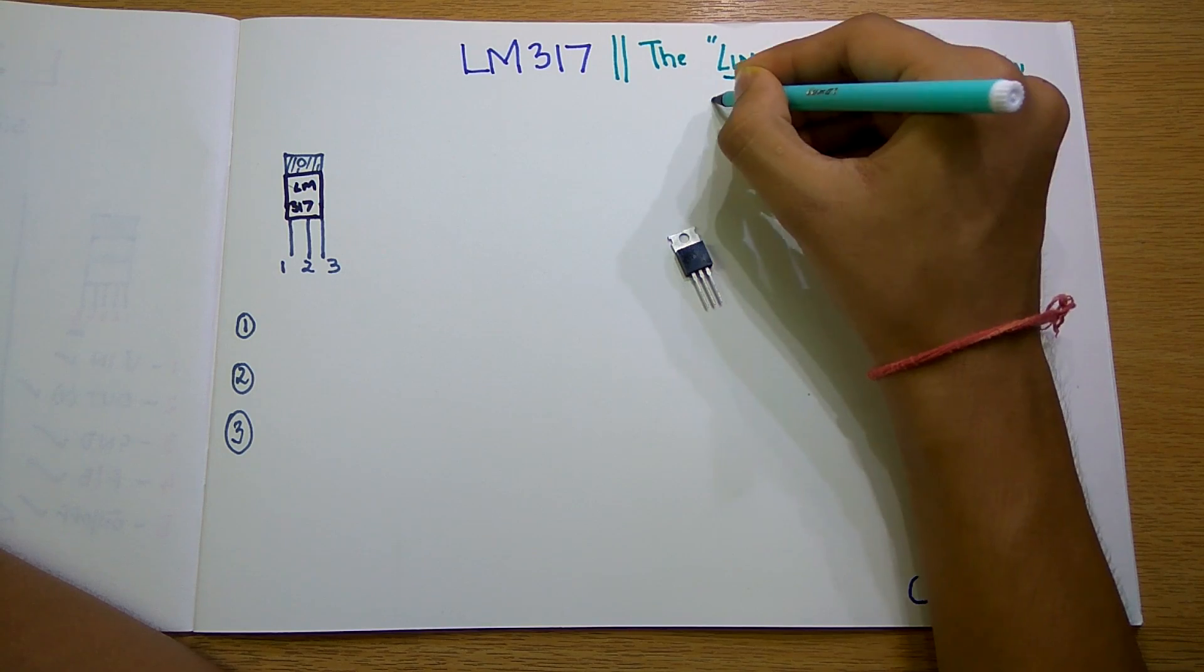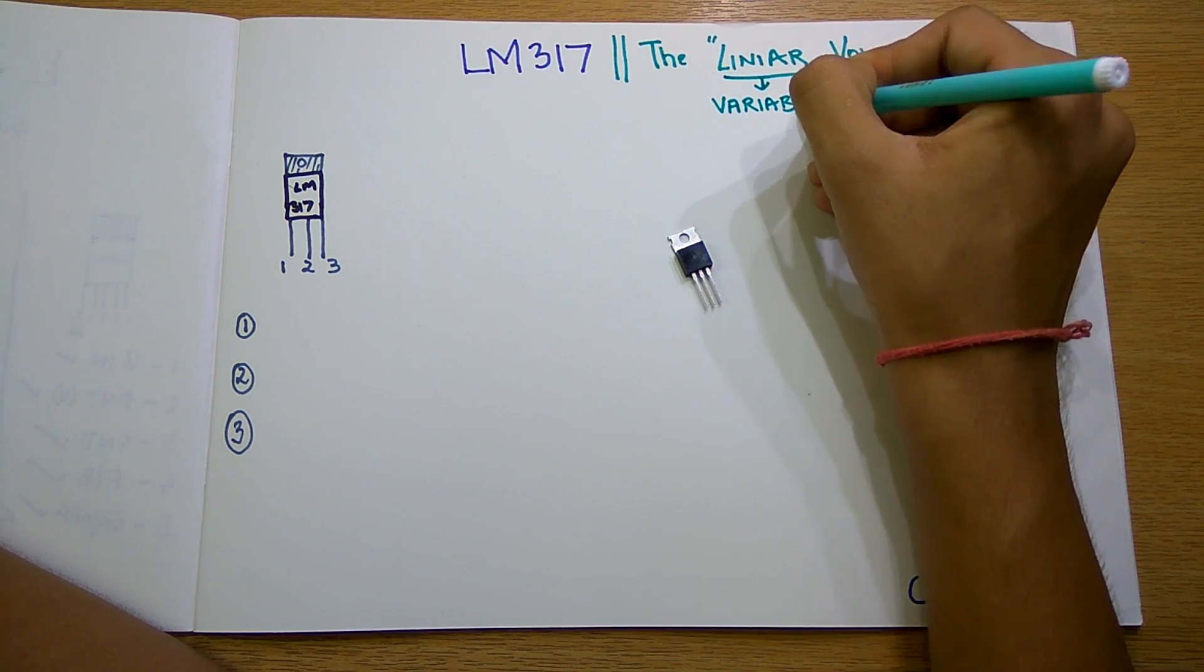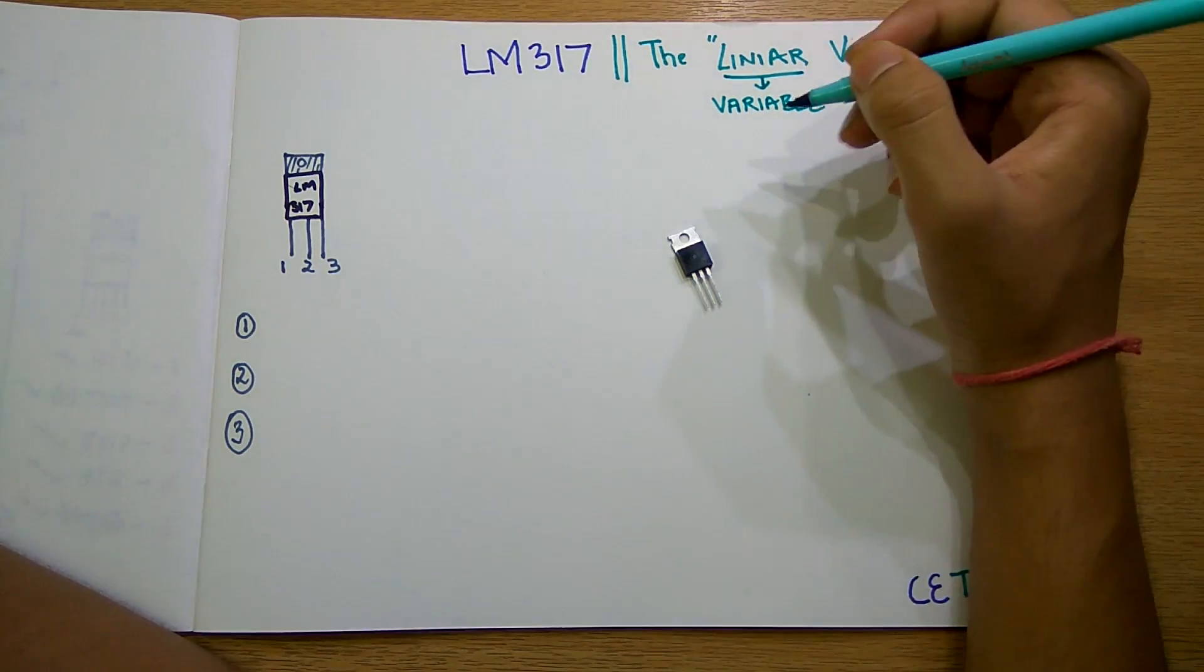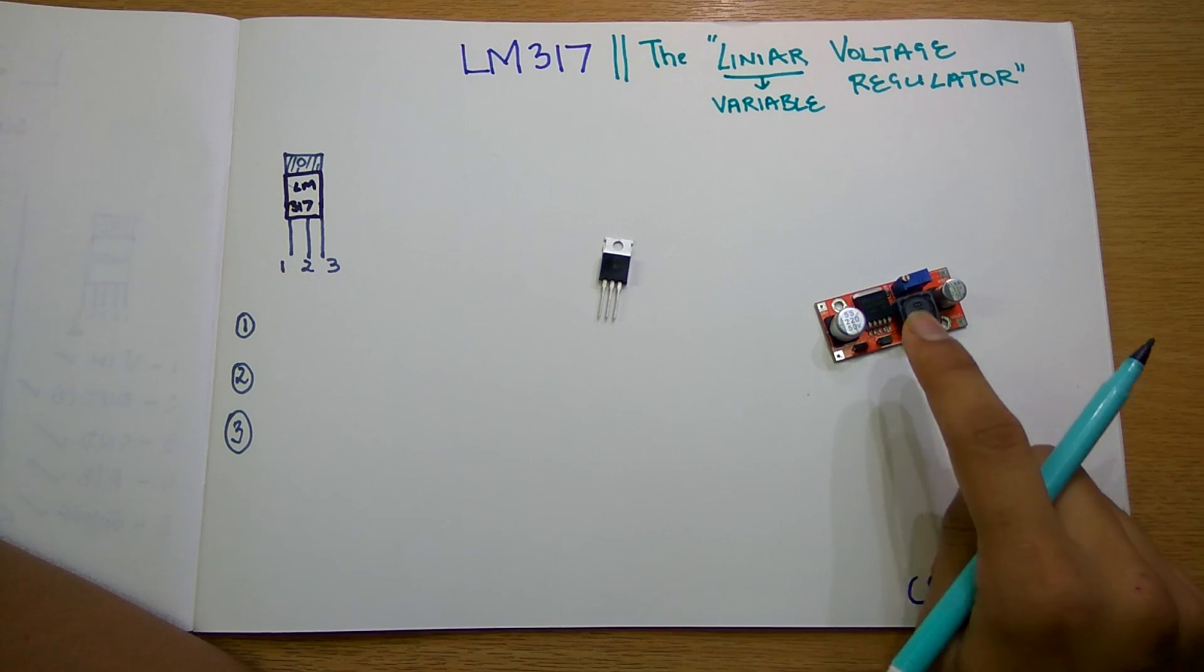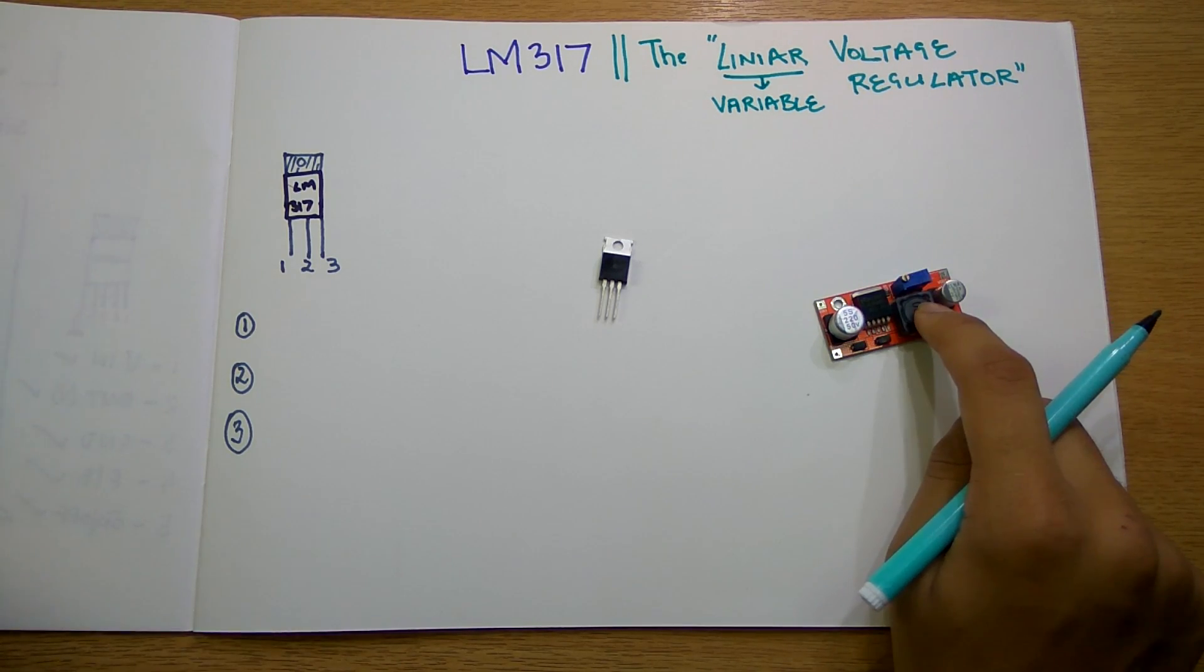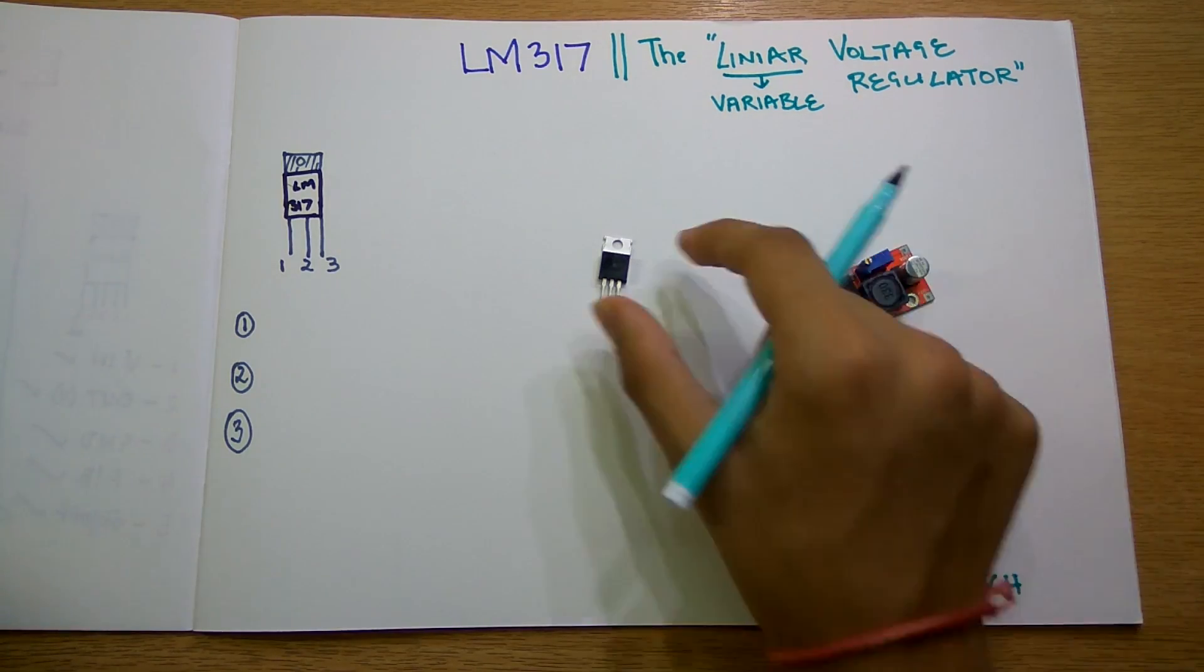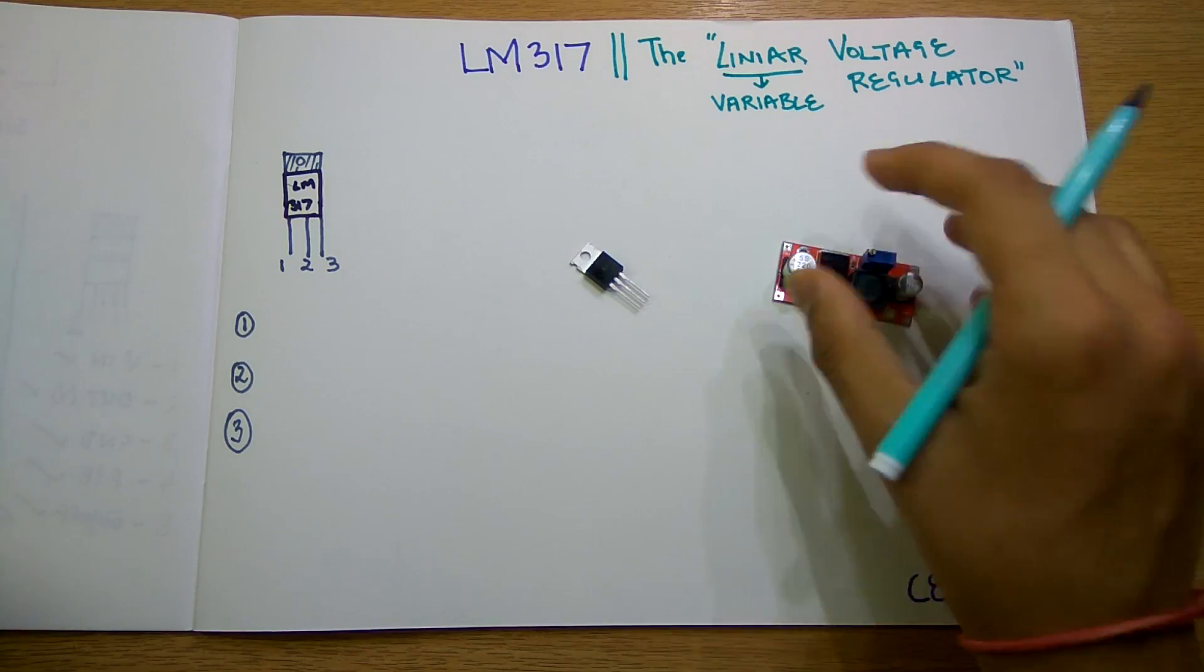This can work something like a DC step-down buck converter. If you know what that is, then you can probably understand what this is. So we will talk about the LM317 today and see how this works, how in a circuit this can be used.